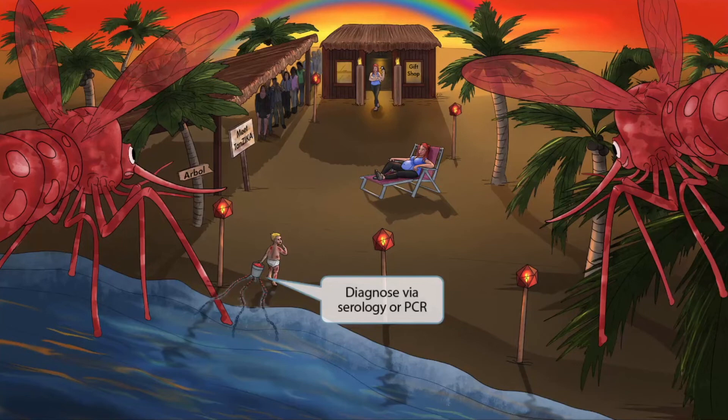He fought back against those nasty blood-sucking mosquitoes and managed to smash up a bunch of them, placing their remains in a now bloody bucket. All of these smashed up and bloody mosquitoes in the bucket represent that Zika virus is diagnosed using a blood sample, or serology. His bucket is also stuck in three chains embedded in the ocean floor. These chains represent that Zika virus can also be diagnosed with polymerase chain reaction, or PCR. So bucket of blood for serology, and three chains for PCR.